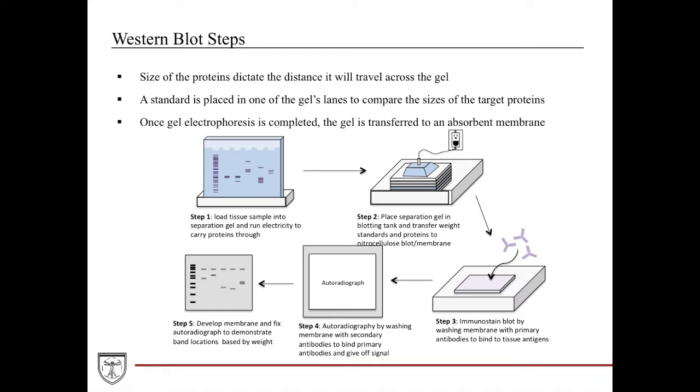Once you finish running your agarose gel, you then take it and you put it into what we call a sandwich. It's sandwiched between different membranes, usually it's a nitrocellulose blot membrane, and you run another electrical current so you can transfer everything that's on your agarose gel onto your nitrocellulose membrane.